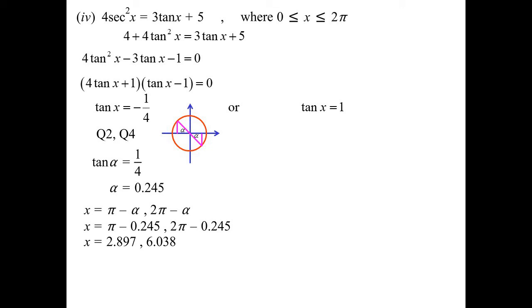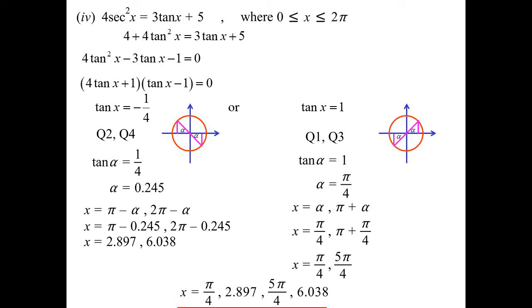Now let's do tan x = 1: first quadrant or the third quadrant. This time we do have an exact value, π/4, so that would be our first quadrant answer. Our third quadrant answer would be π plus that, so 5π/4.